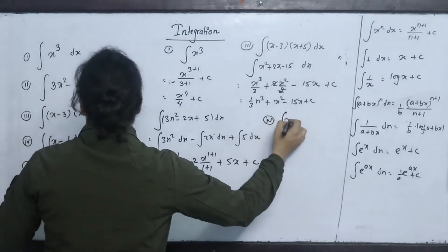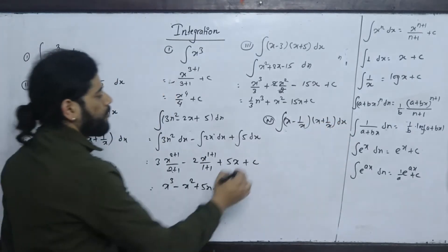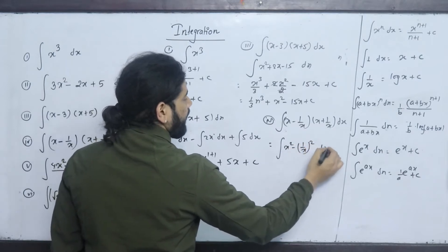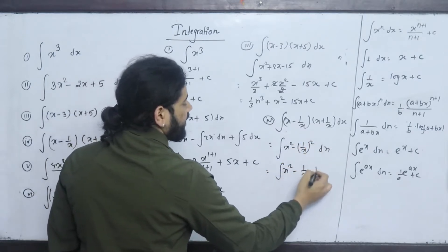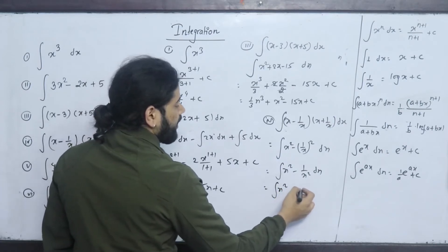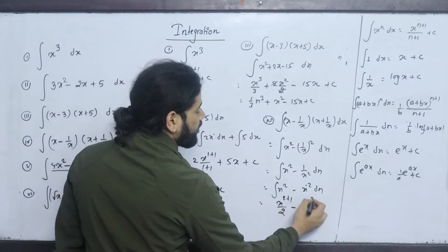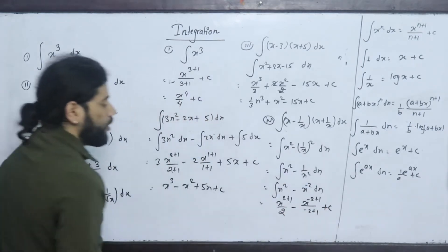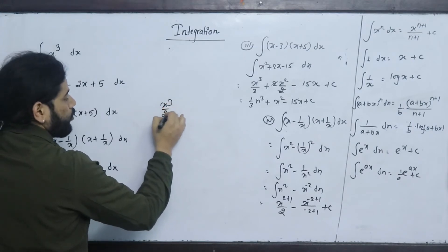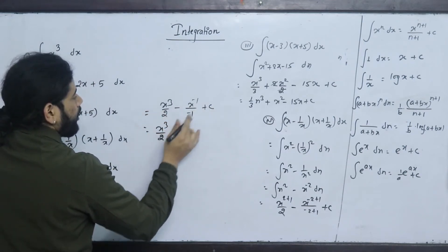Fourth question: ∫(x − 1/x)(x + 1/x)dx. Using the (a−b)(a+b) = a²−b² identity: x² − 1/x² = x² − x^(−2). Integrating: x^(2+1)/(2+1) − x^(−2+1)/(−2+1) + c = x³/3 − x^(−1)/(−1) + c = x³/3 + 1/x + c.